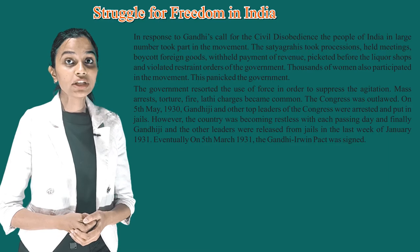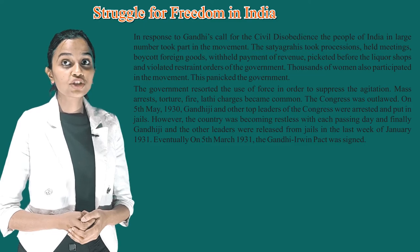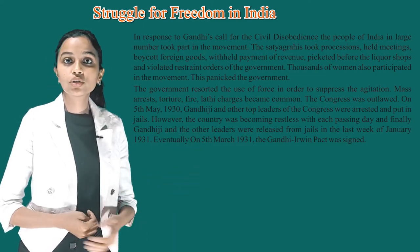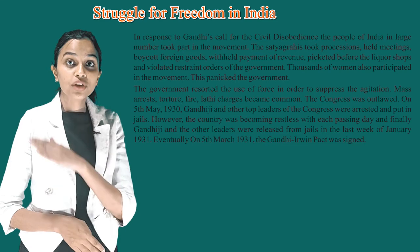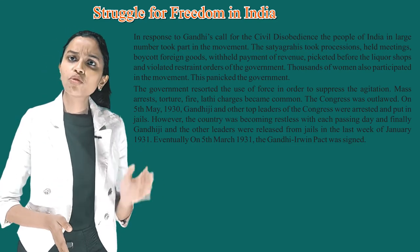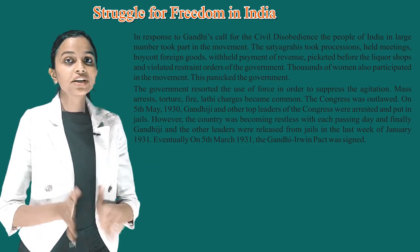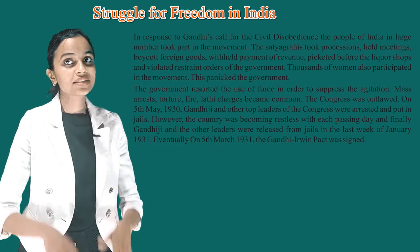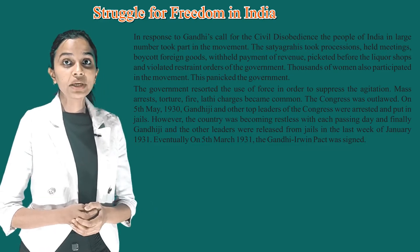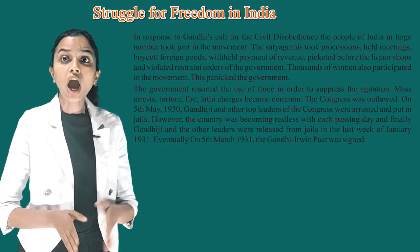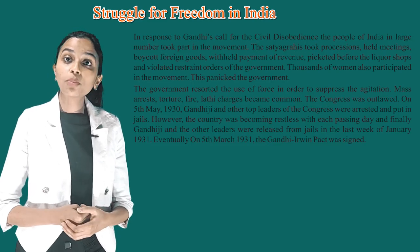In response to Gandhiji's call, the people of India in large numbers took part in the movement. The Satyagrahis took out processions, held meetings, boycotted foreign goods, withheld payment of revenue, picketed before liquor shops, and violated restraint orders of the government. Thousands of women also participated in the movement. This panicked the government, which resorted to use of force — mass arrests, torture, and lathi charges became common. The Congress was outlawed, and on 5th May 1930, Gandhiji and other top leaders were arrested and put in jail.